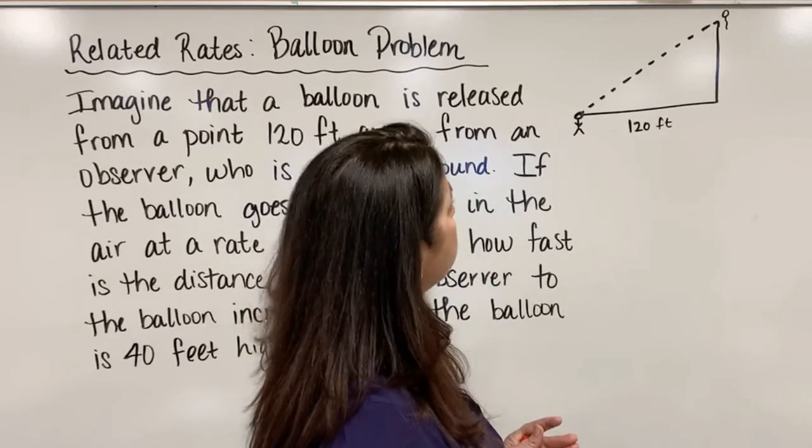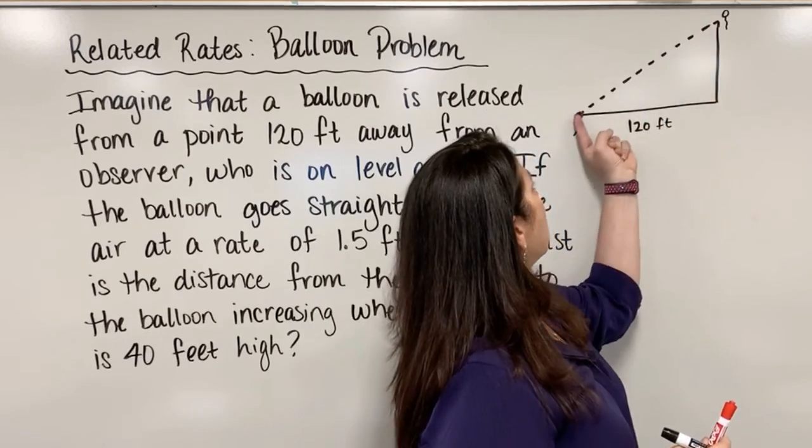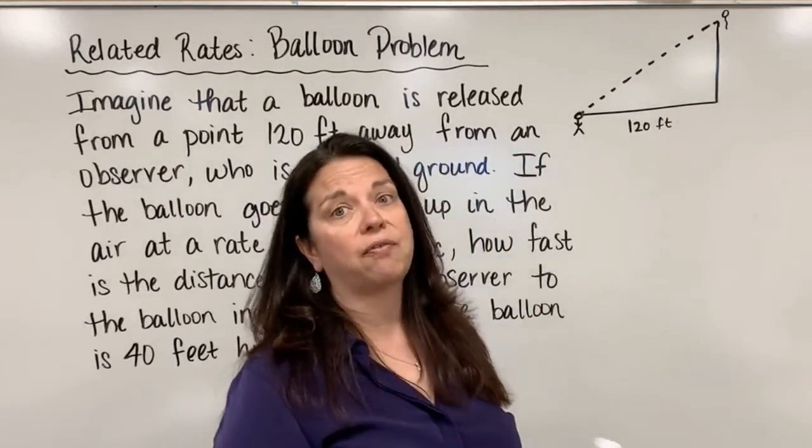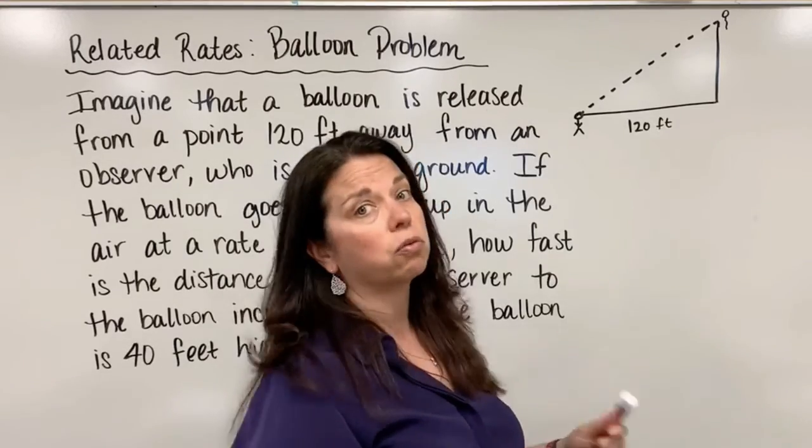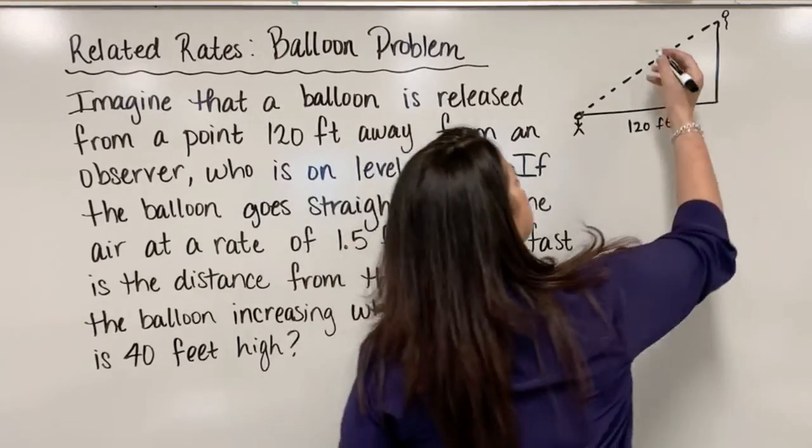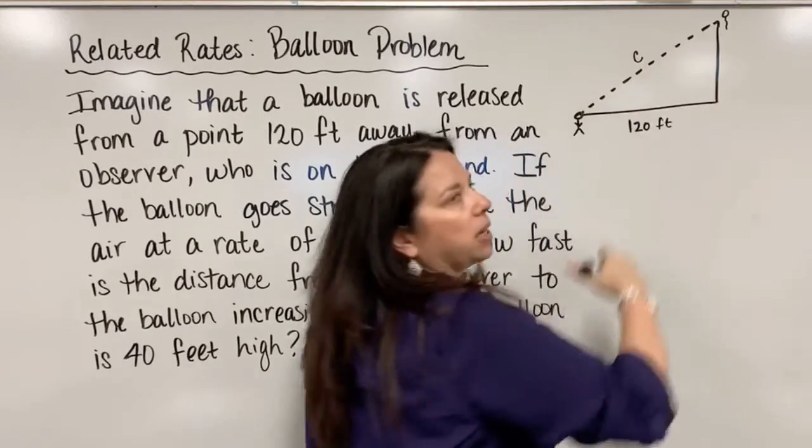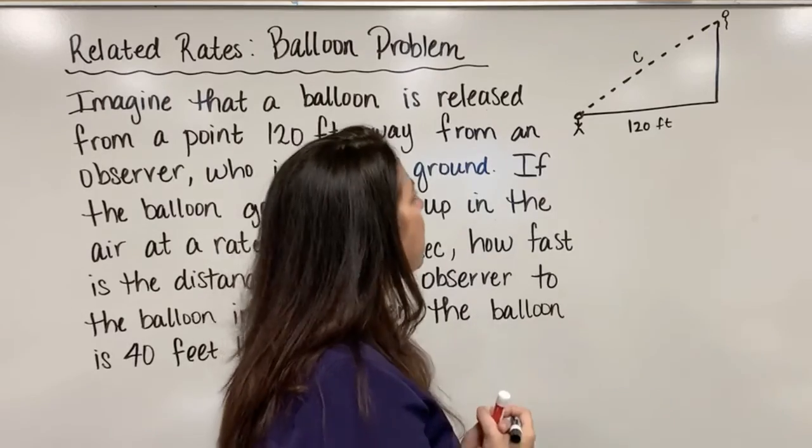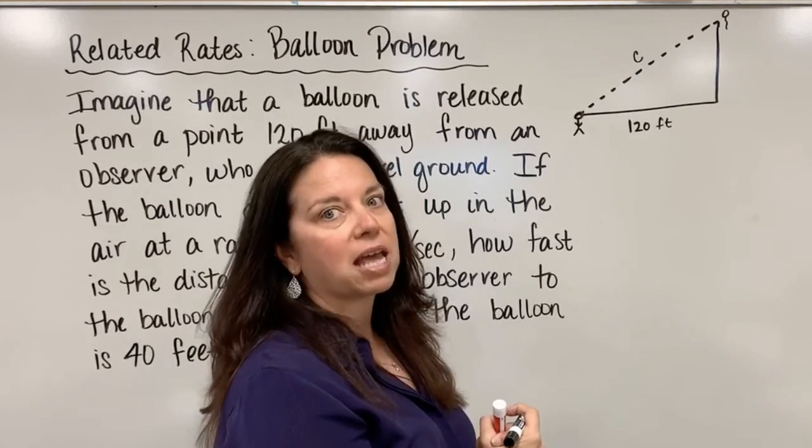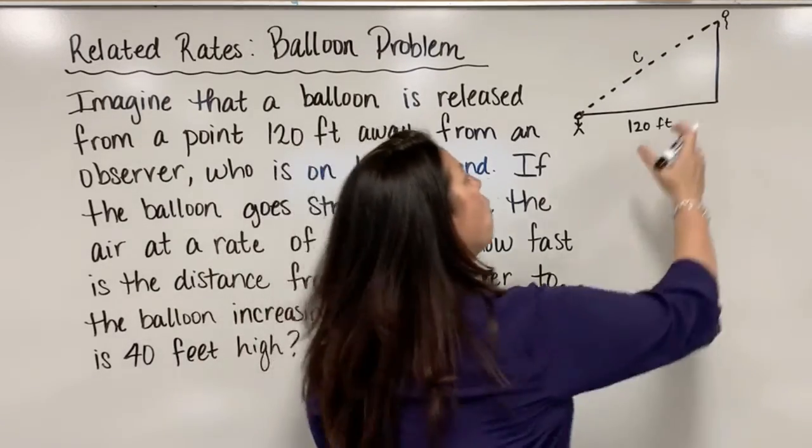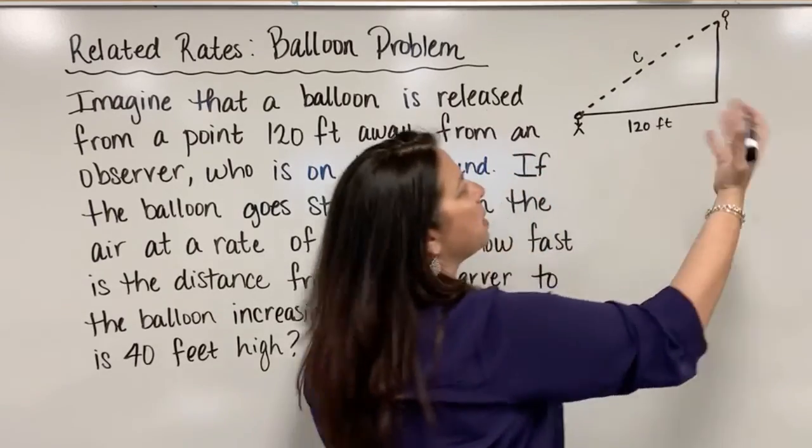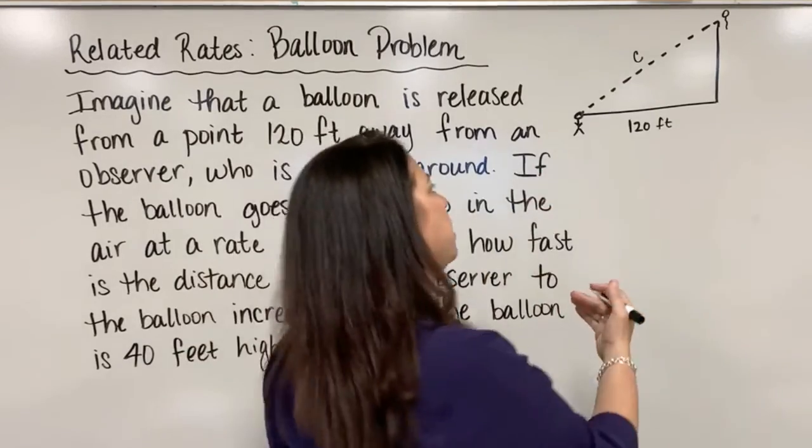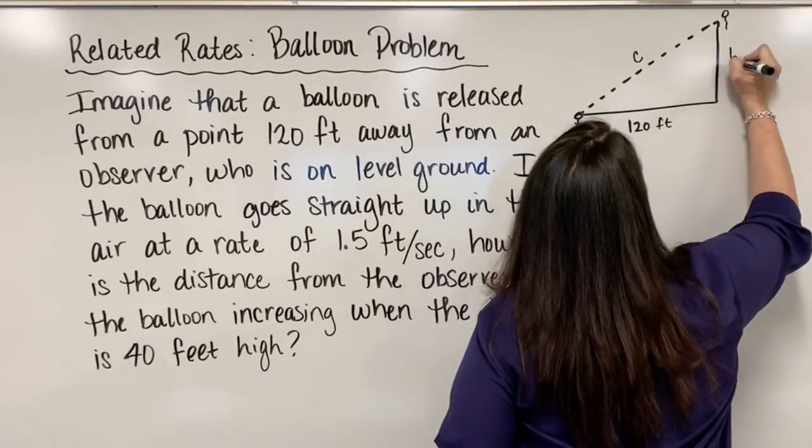But what is changing is this dashed length between observer and the balloon. We don't know how fast that's changing. We also don't know what the actual length is. Let's call it C, because usually we label hypotenuses with C as it connects to the Pythagorean theorem. Over here, we could call this maybe length A or B, but because it represents a height in this scenario, let's use H for height.